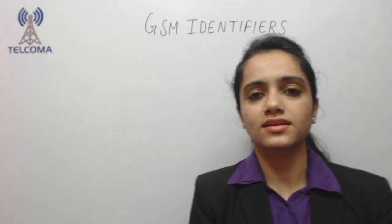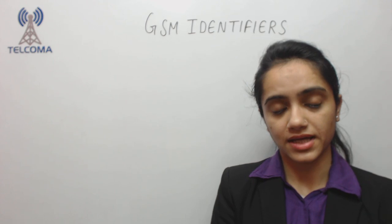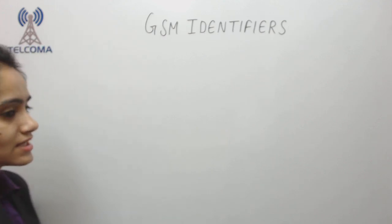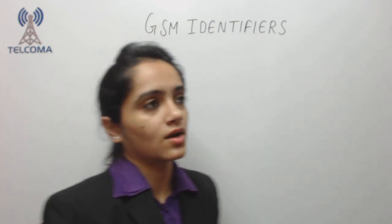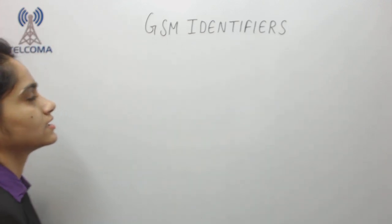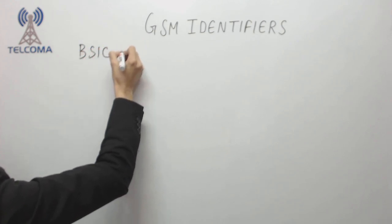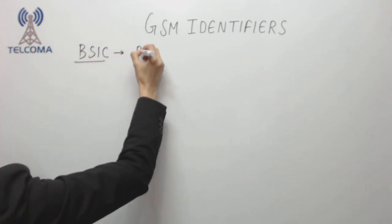Hello and welcome to another class on GSM identifiers. In the last class we discussed MSISDN, IMSI number, temporary mobile subscriber identity, and MSRN. Today we are starting with BSIC, which is an identifier.